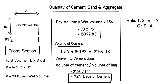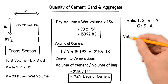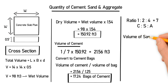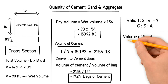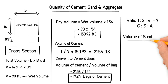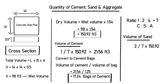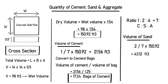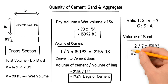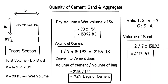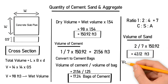Now let's find the volume of sand. In the ratio, sand is 2 divided by the total ratio 7, multiplied by the dry volume of 150.92. This gives a sand volume of 43.12 cubic feet.